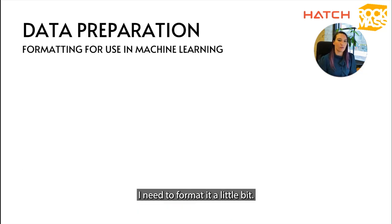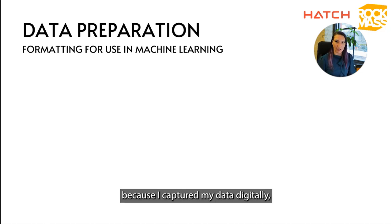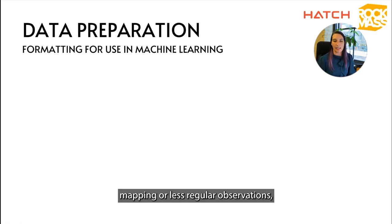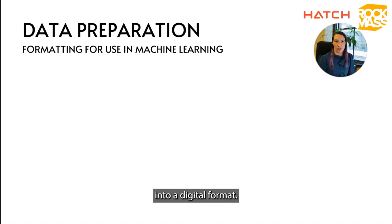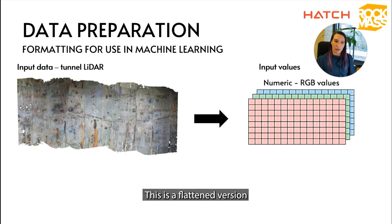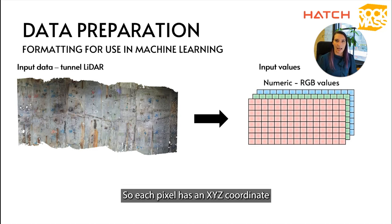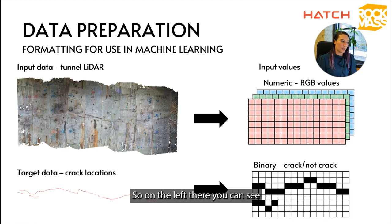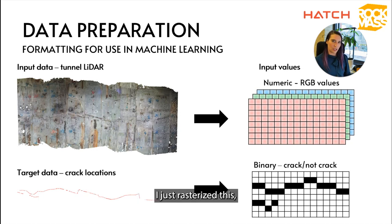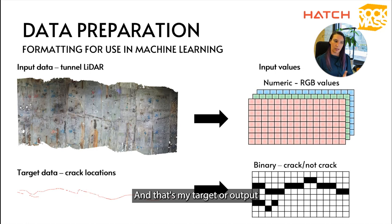Before training an algorithm with this data, I need to format it. Because I captured my data digitally, there's not a lot of formatting needed, but if you're training on more traditional inputs like hand-drawn mapping, you do need to convert that to a digital format compatible with your prediction target. In this case I took the LiDAR input — a flattened version of the tunnel crown — and rasterized it, so each pixel has an XYZ coordinate and an R, G, B value. For the target data, I rasterized the DXF annotation file so I ended up with an image of the same dimension as the input but with binary values: 0 or 1, crack or no crack.